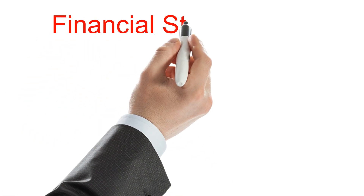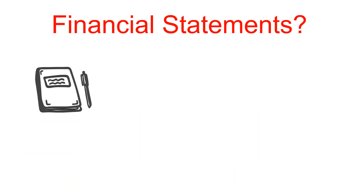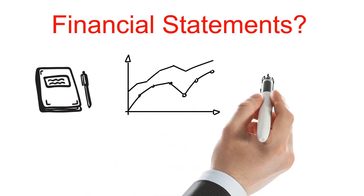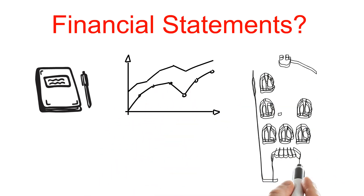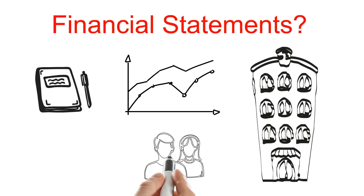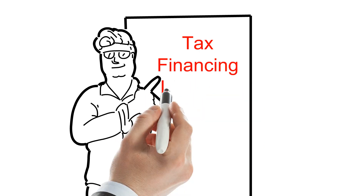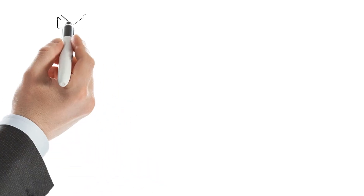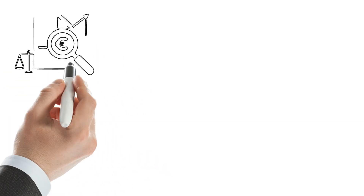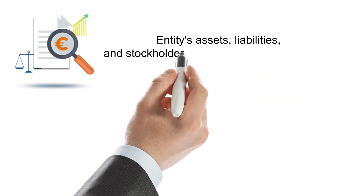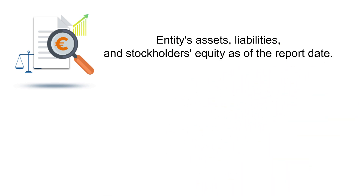Financial statements are written records that convey the business activities and the financial performance of a company. Financial statements are often audited by government agencies, accountants, firms, etc., to ensure accuracy and for tax, financing, or investing purposes. Financial statements include the balance sheet, which shows the entity's assets, liabilities, and stockholders' equity as of the report date. It does not show information that covers a span of time.